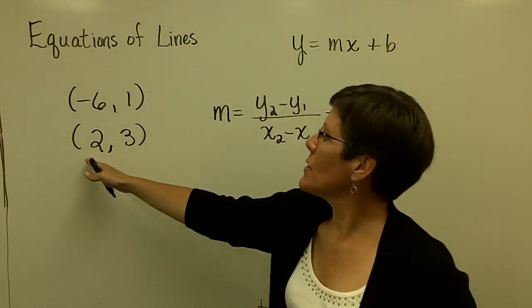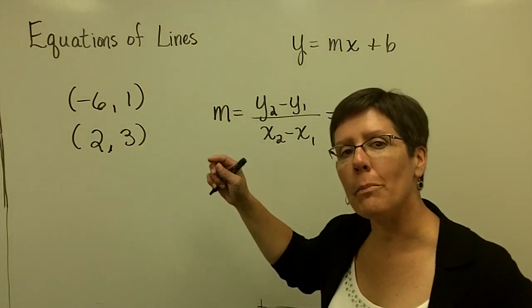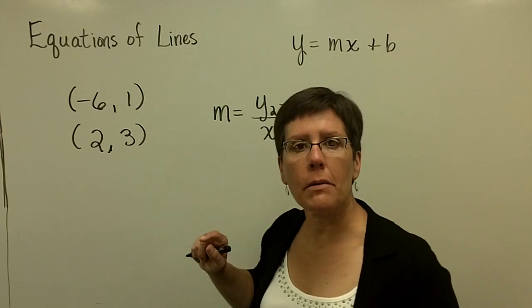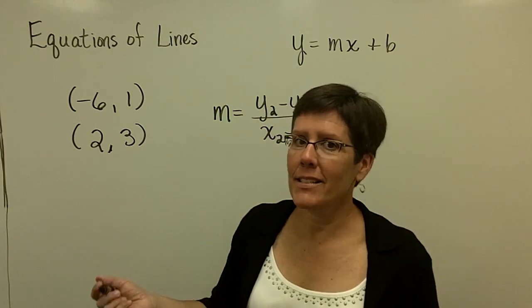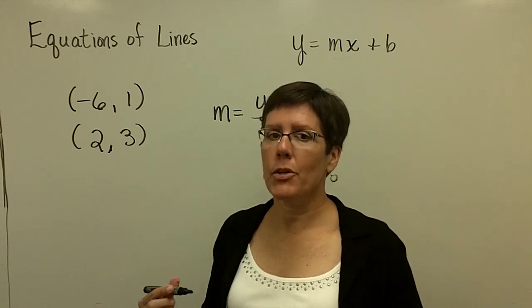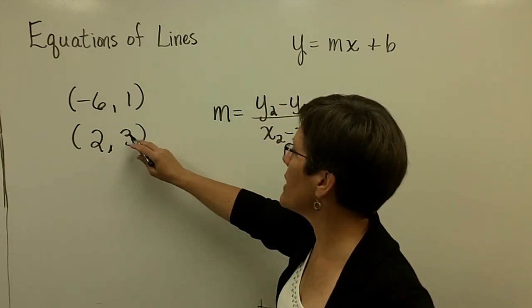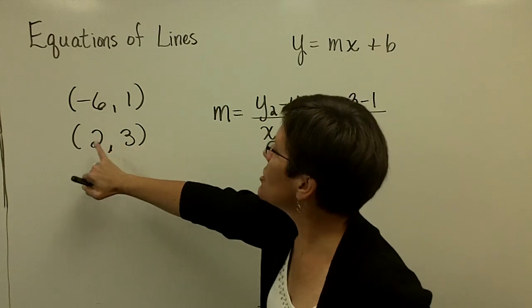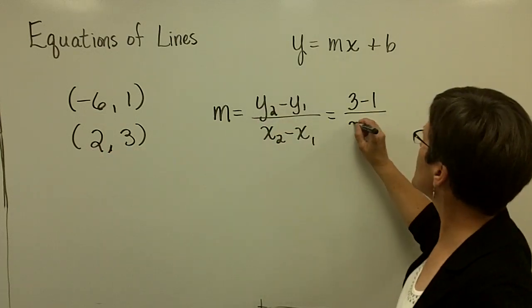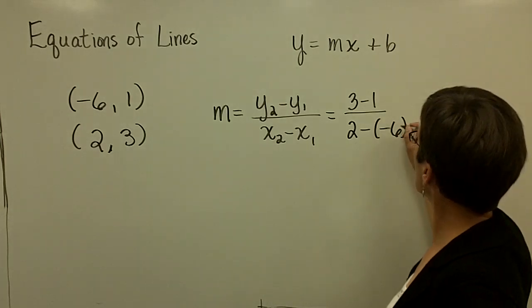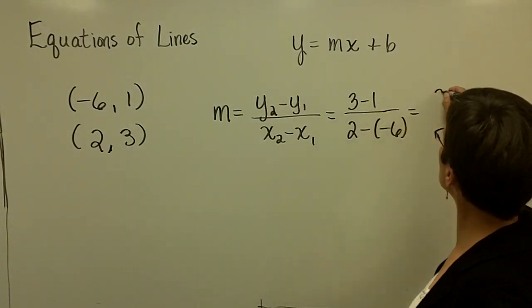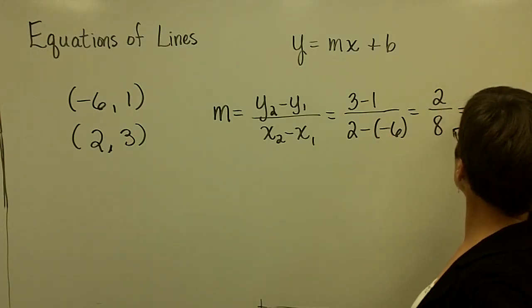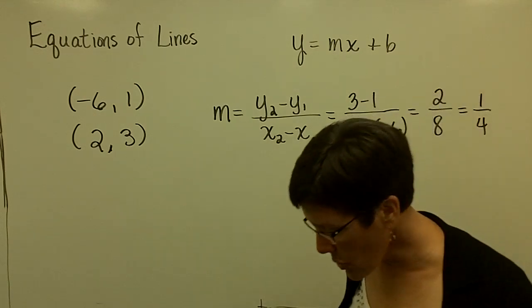So I am going to use this point as my second point. I always kind of look at my y's first. And I prefer to take 3 and subtract 1 than 1 and subtract 3. It may work out nice and it may not work out nice because the x values when subtracted might be something negative. But I am trying to make y be positive by taking 3 and subtracting 1. So if I go in that order, 3 minus 1, then I must use this value first in the denominator. So take 2 and subtract that negative 6 from upstairs. So the slope of this line, 3 minus 1 is 2, and 2 plus 6 is 8, and that reduces to 1 fourth. So I've got the slope of my line.